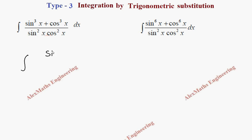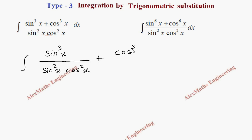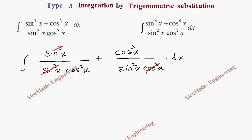We take the first term sine cubed x and divide by the denominator sin²x · cos²x. In the same way, let's take the second term cos cubed x and divide by sin²x · cos²x. Now wherever possible let's cancel — here we can cancel the entire sin²x with the cube, so only sin x remains. The same way cos²x can be cancelled.